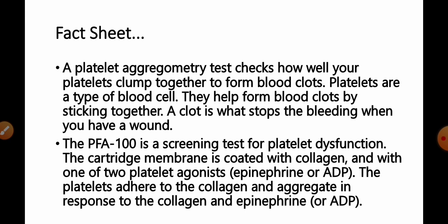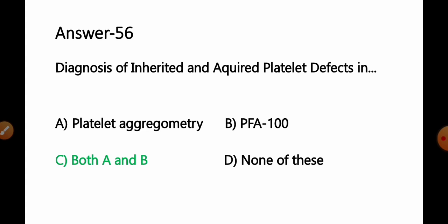In the PFA-100 test, the cartridge membrane is coated with collagen and one of two platelet agonists — epinephrine or ADP. Platelets adhere to the collagen and aggregate in response to collagen and epinephrine or ADP. Both platelet aggregometry and PFA-100 are used to diagnose inherited or acquired platelet defects. So option C, both A and B, is correct.